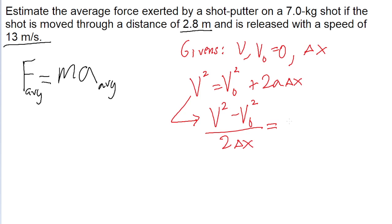So let's put in our values now. Let's put this term into our formula for the average force. So the force is equal to mass times v squared minus v naught squared divided by two delta x.